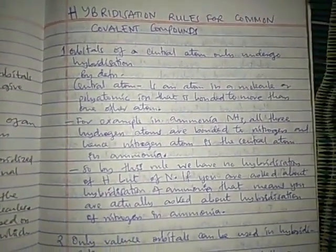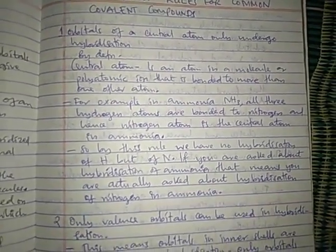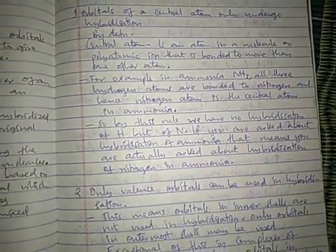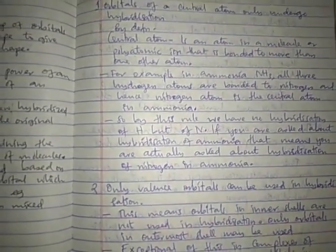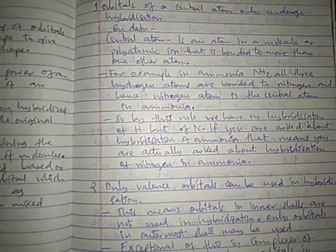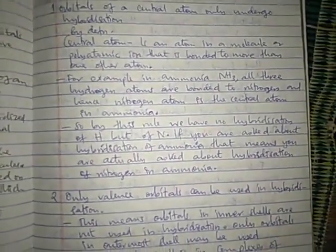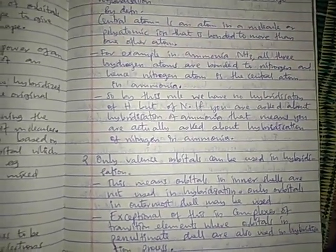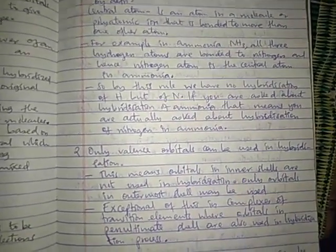The peripheral hydrogen atoms do not undergo hybridization. So if you are asked about the hybridization of ammonia, you are actually being asked about the hybridization of the nitrogen atom. Similarly, if asked about the hybridization of methane, it refers to the carbon atom, which is the central atom. Some molecules like ethene can have two central atoms — ethene has two carbon atoms each bonded to peripheral hydrogen atoms, so hybridization refers to one among those carbon atoms.